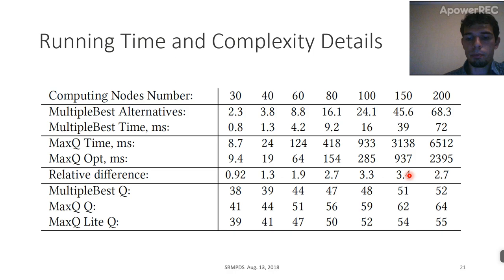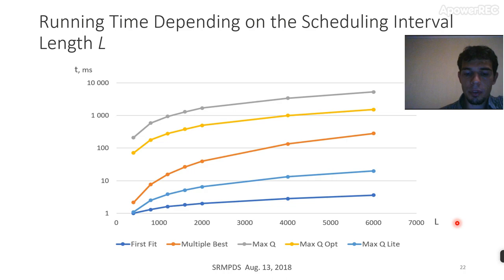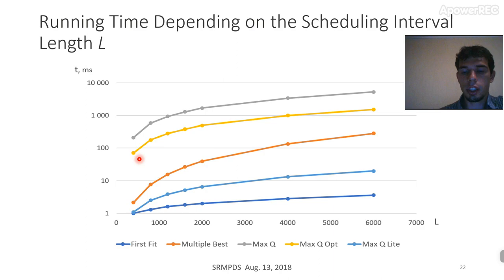In addition, this table shows how the Q value rises for different numbers of nodes in the environment. This graph shows the same algorithms and their running time, but this time according to the length of the scheduling interval. Here we have a similar picture with MaxQ and MaxQopt having the maximum running time, but with MaxQopt's heuristic giving a threefold advantage over the initial MaxQ algorithm.